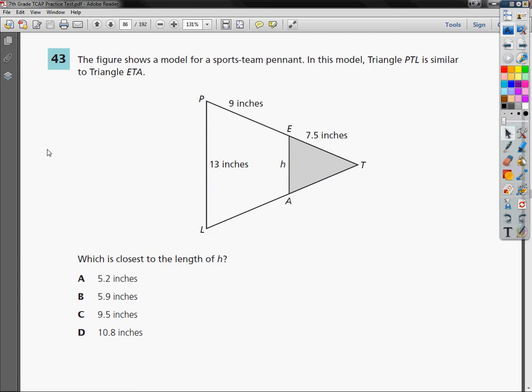The figure shows a model for a sports team pennant. I'm hopeful that their actual color scheme is not white on gray because nothing inspires fear more than a triangle that's white and gray, but either way. In this model, triangle PTL is similar to triangle ETA.